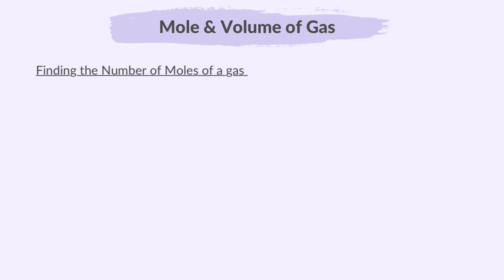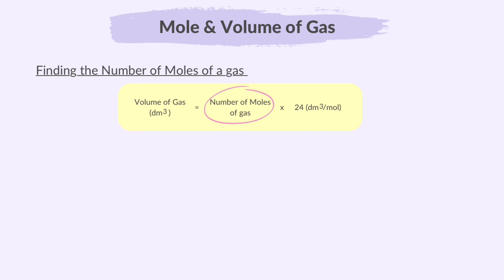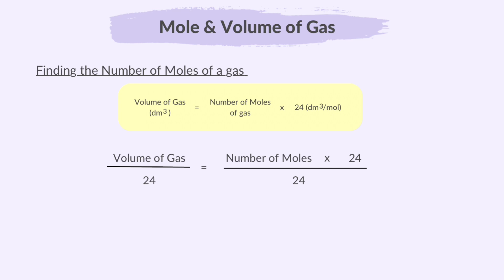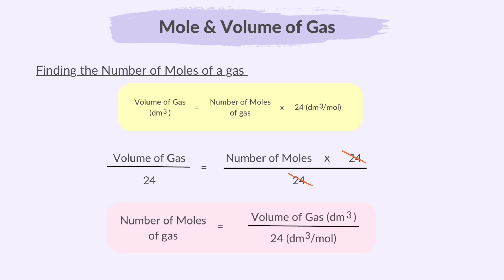How do we find the number of moles of a gas if the volume of gas is given? We simply rearrange the volume of gas formula and make number of moles the subject. We divide both sides by 24 — the 24s on the right cancel out — and the formula becomes: number of moles of gas = volume of gas ÷ 24.